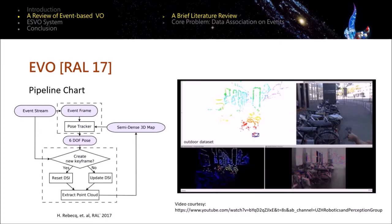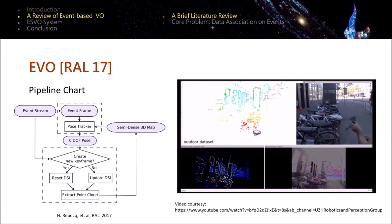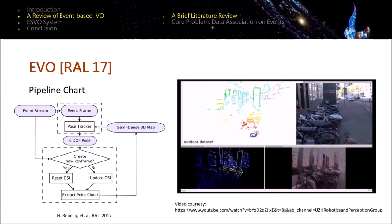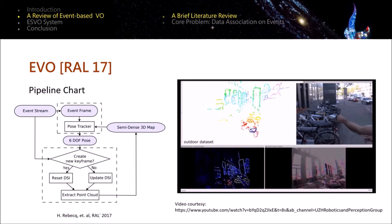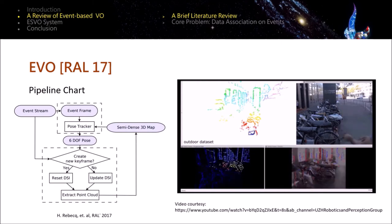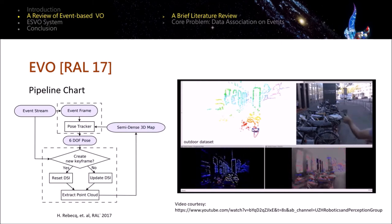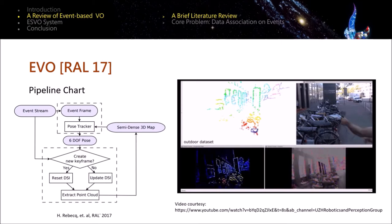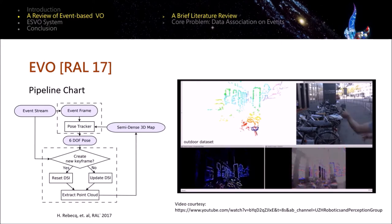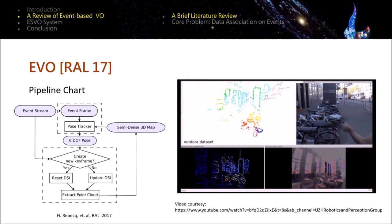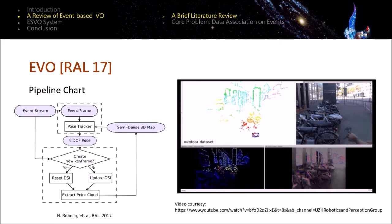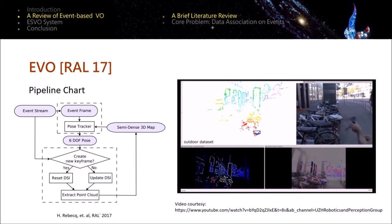The second representative work is EVO published by Henry Rebecq et al. in 2017, which is a geometric method. It doesn't require to recover intensity information from events, and therefore it follows the classical design with two independent threads. The proposed mapping solution is based on the event-based temporal stereo method, which determines the 3D location of structure by searching the maximum in the disparity space image. The camera pose tracking is performed through a 3D to 2D registration process, which aligns the 3D edge map to the synthesized event map.